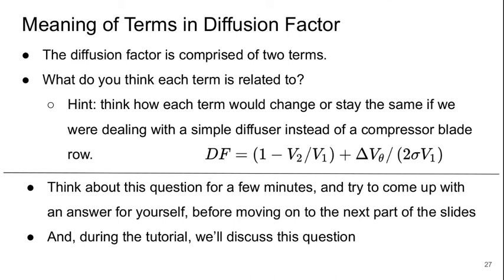There's two terms in that diffusion factor. What do you think each term is related to? Here's the equation again. Think about how each term would change or stay the same if we were dealing with a simple diffuser in a duct instead of a compressor blade row. Think about this for a couple minutes and try to come up with your own answer before you move on to the next part of the video. We'll also take this up during the tutorial.